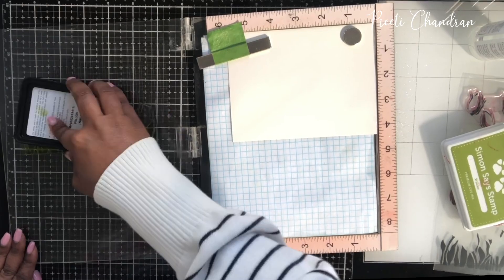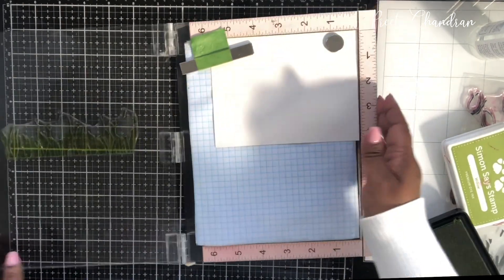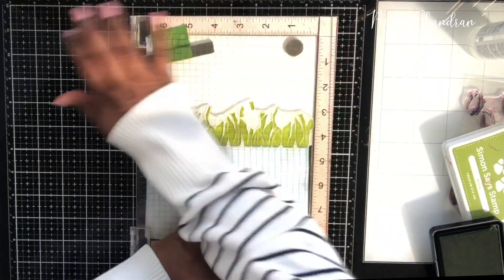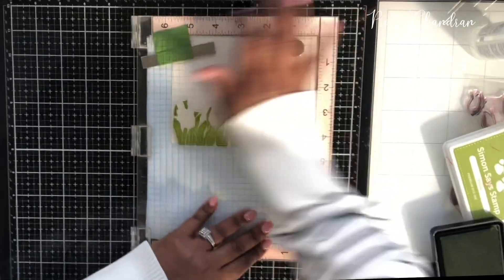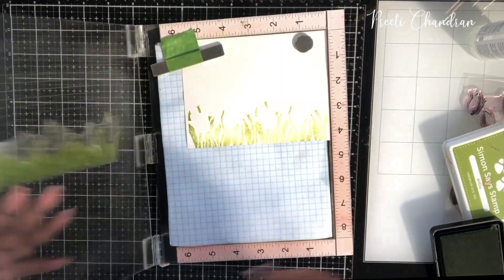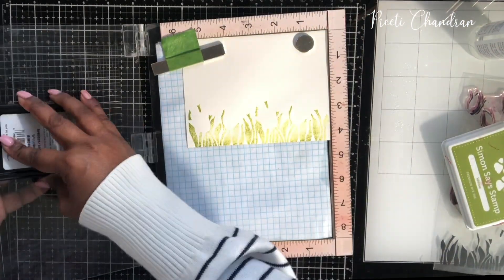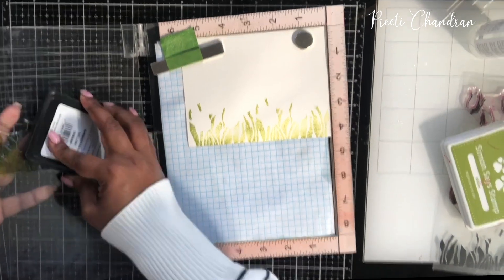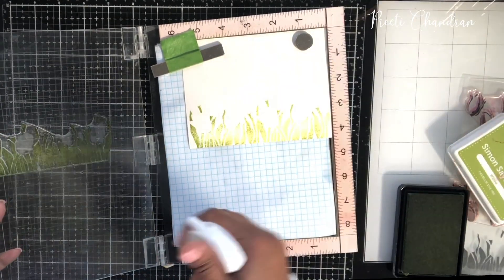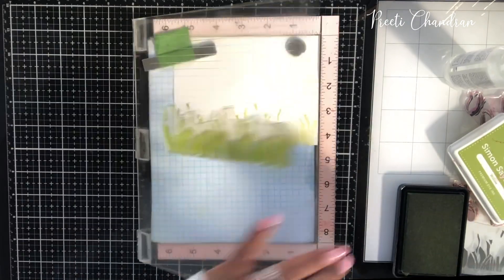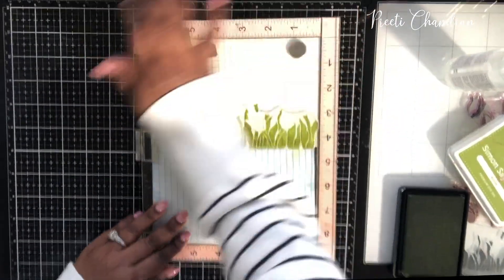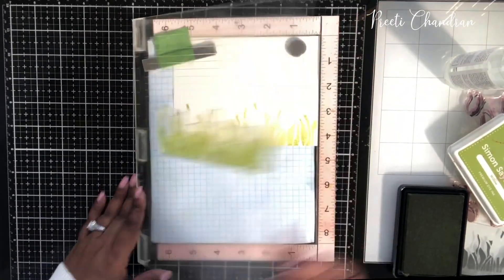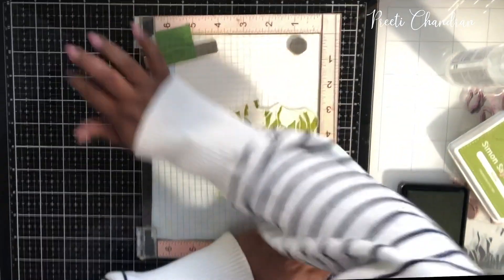What I did is I spritzed the paper first with some water and then I stamped this first layer of the tulip leaves using Willow ink from Simon Says Stamp. This helps the dye ink to disperse in the water rather than stamping solid. It disperses because there's water on the surface.